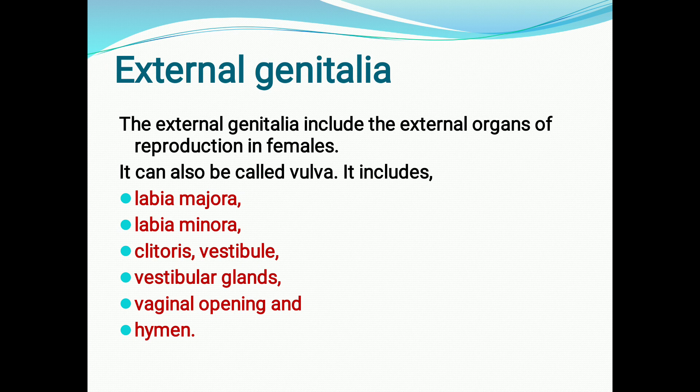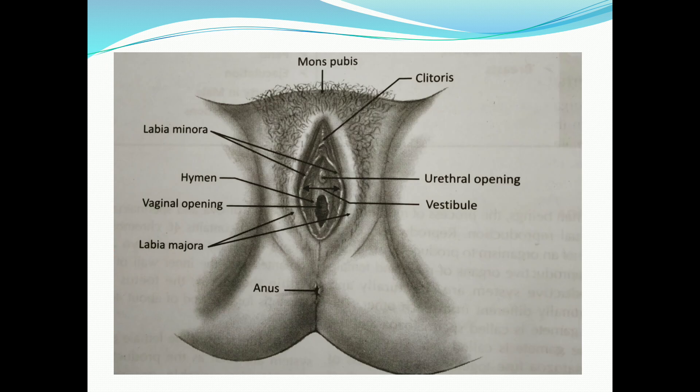External genitalia includes the external organs of reproduction in females, present outside the pelvic body cavity. This external genitalia can also be called the vulva. Different structures present in the vulva include labia majora, labia minora, clitoris, vestibule, vestibular glands, vaginal opening, and hymen.